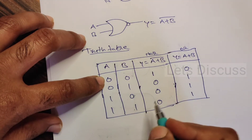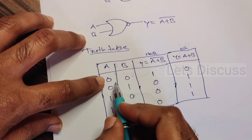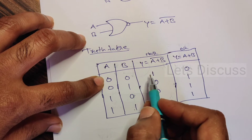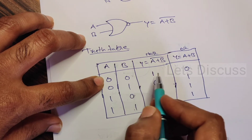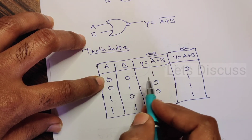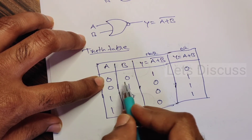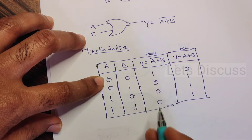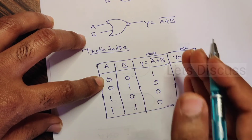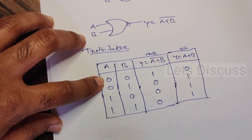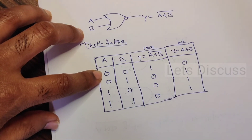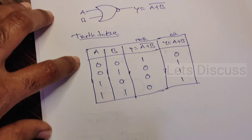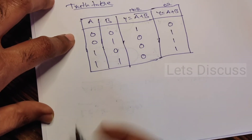From this we can say that the output of the NOR gate is high only when both the inputs are low. It is just opposite to the OR gate.